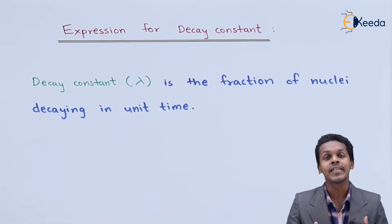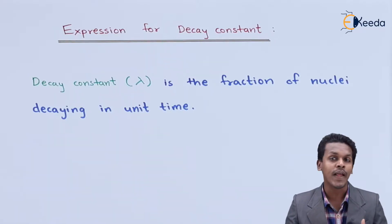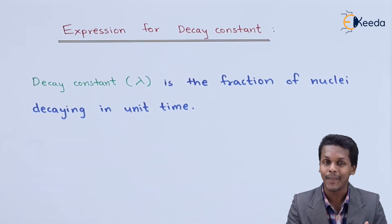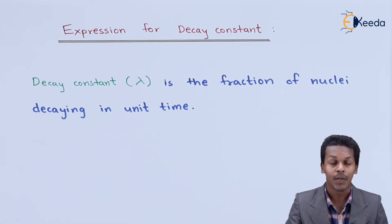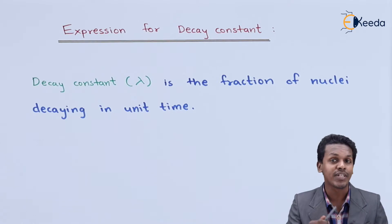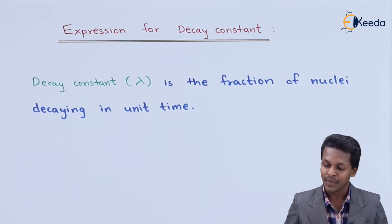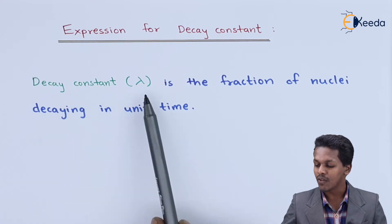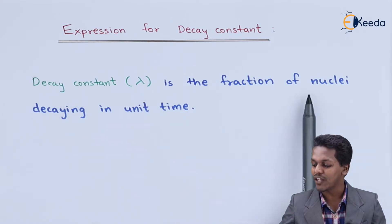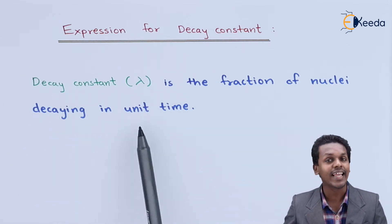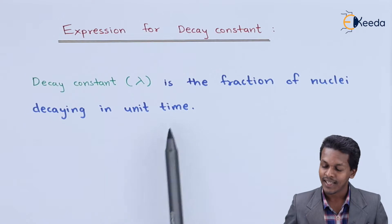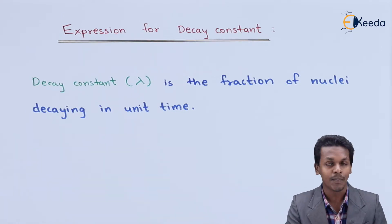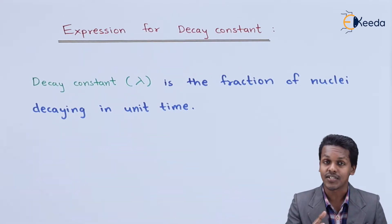In this topic, we are going to talk about the decay constant and see how we can derive a particular equation based on it. But before that, let us understand what is actually the decay constant. Decay constant is represented by lambda, and it is defined as the fraction of nuclei decaying in unit time.